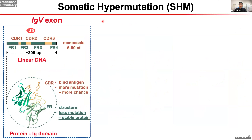We are particularly interested in somatic hypermutation, where AID generates mutations in this small exon coding the immunoglobulin variable domain, including the CDR region which binds antigen, and the framework region which maintains antibody structure. Ideally, we would put more mutations in the CDR because it gives a higher chance of high-affinity antibody, but we don't want many mutations in the framework region because any mutations there could disable the protein. And in nature, this selection mechanism already exists.